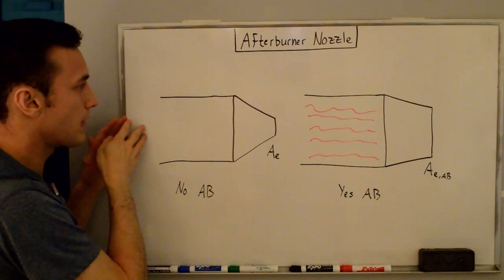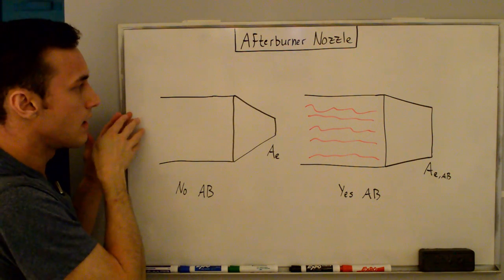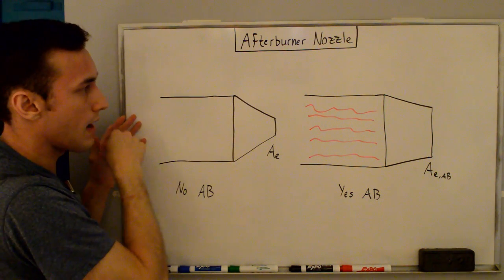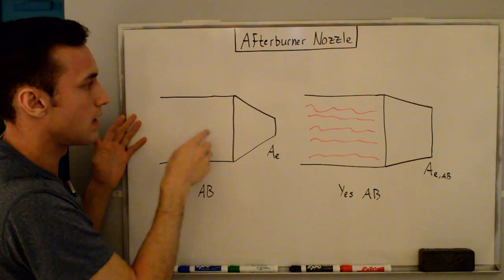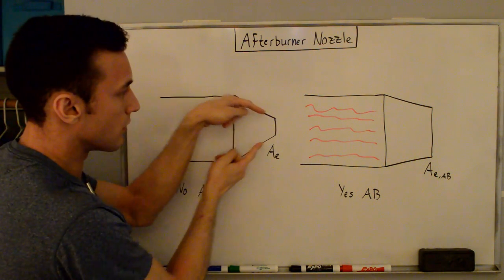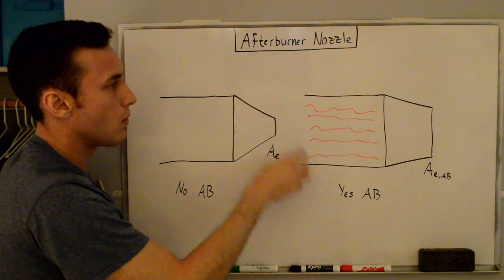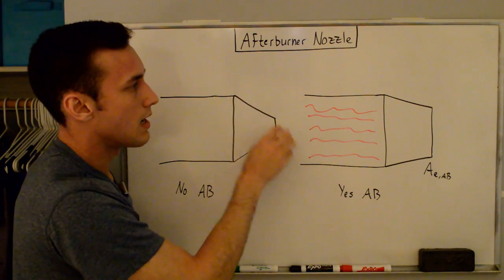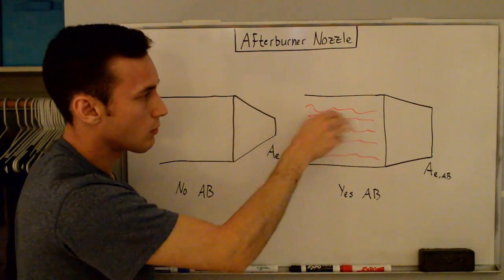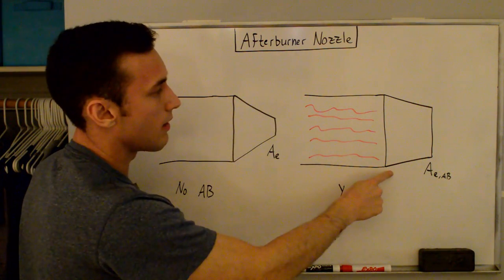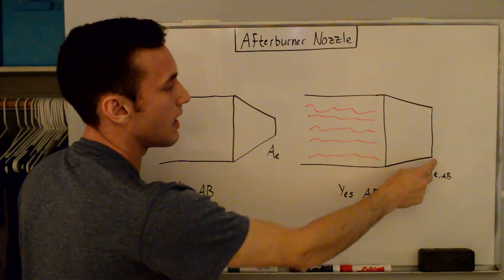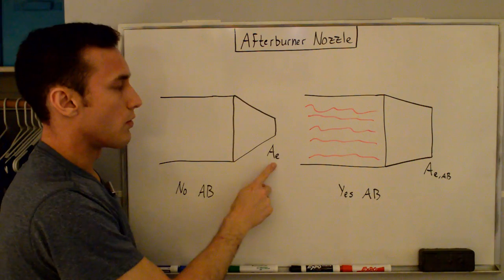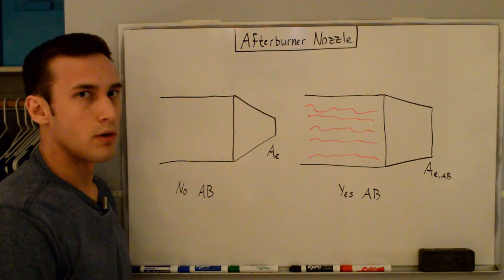This is a really rough schematic of the back of the engine, so we're just looking at the afterburner jet pipe and then the nozzle for both the case when we have no afterburner and when we do have an afterburner. When we don't have an afterburner, whatever's coming out of the turbine goes straight through the jet pipe without any extra fuel ignited, and then out this nozzle of converging area.